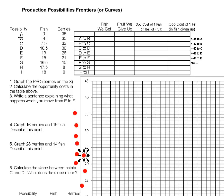Possibility A is to not spend any time fishing and to spend all their time collecting berries, in which case they would get 36 pounds of berries in one day. Possibility B: they spend some time fishing but most of their time picking berries, getting 4 pounds of fish and 35 berries.